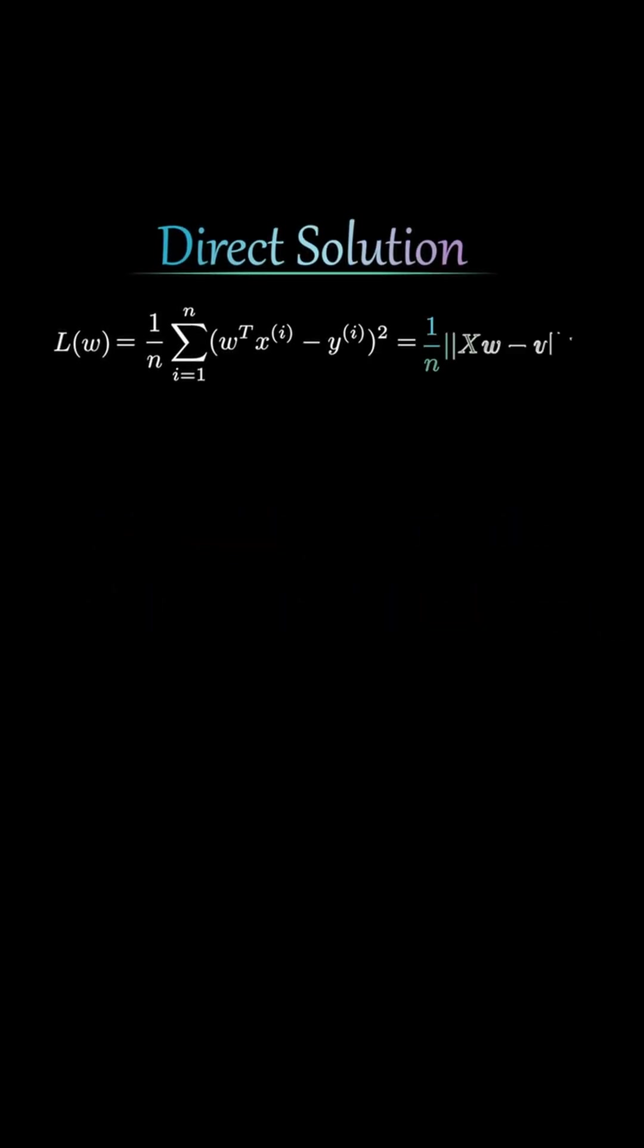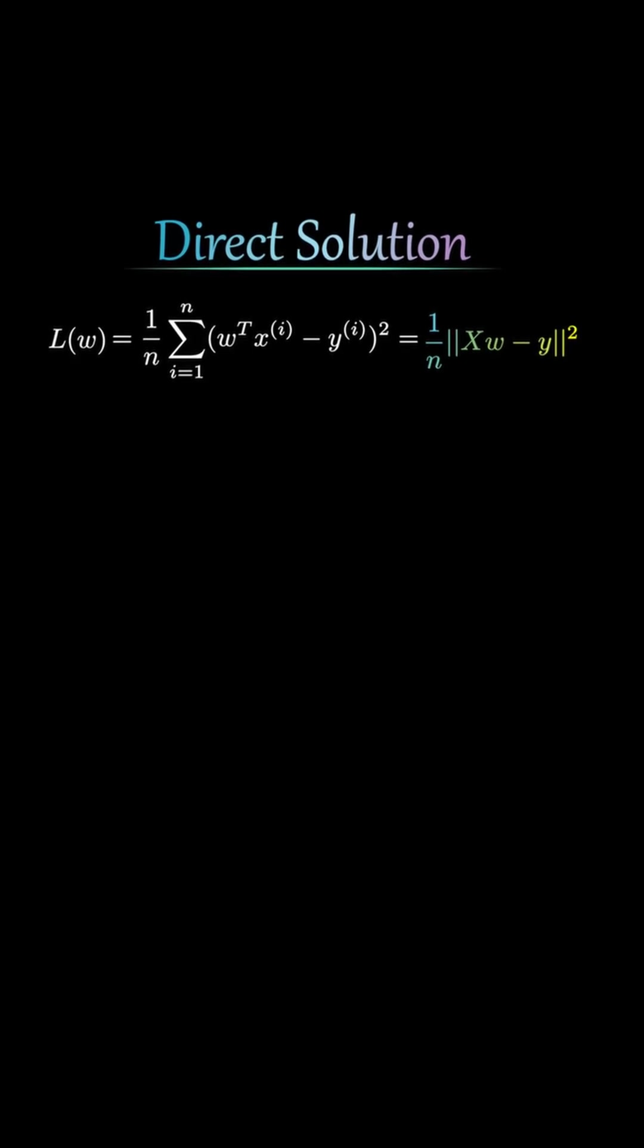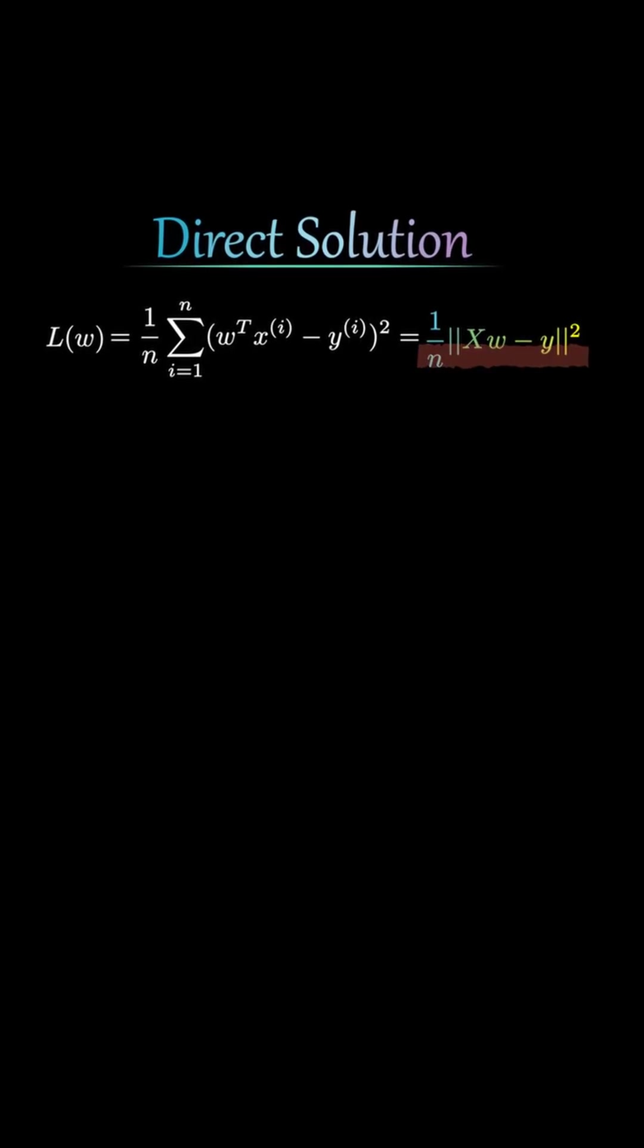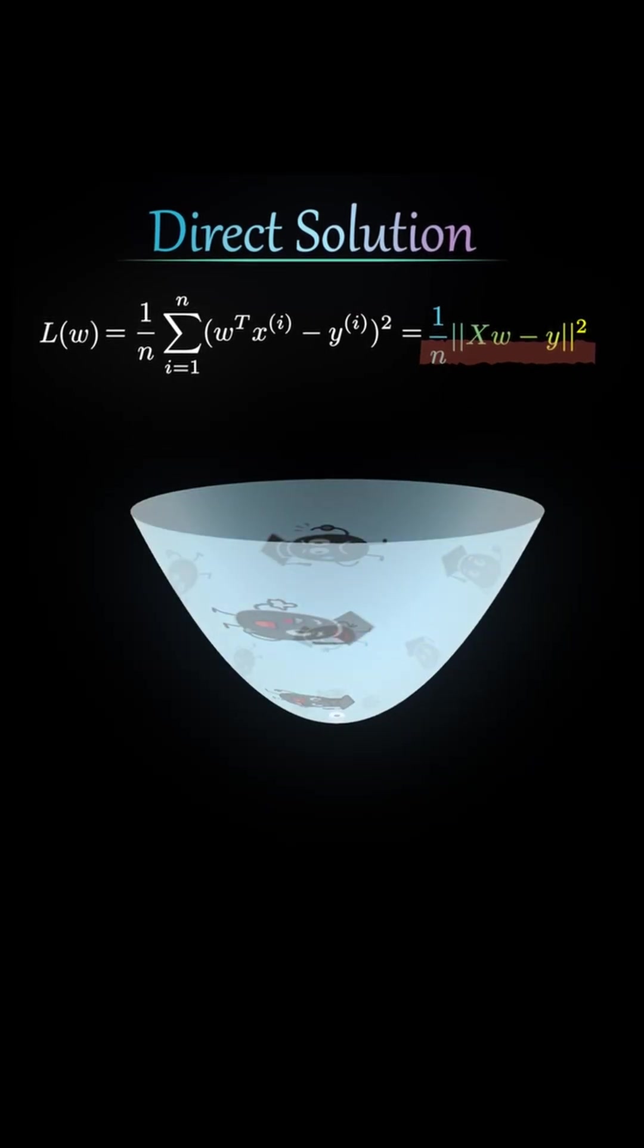Alright, so this is how the MSE can be written in matrix form. We can take the partial derivative of L with respect to the weight vector w and find the w vector that minimizes L.